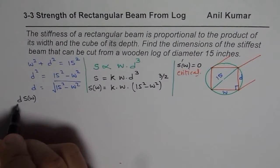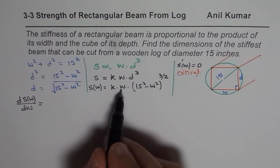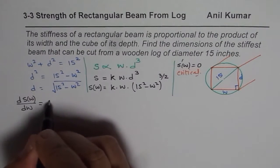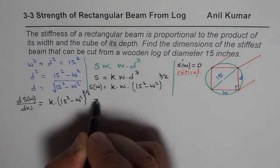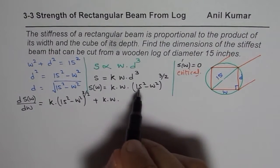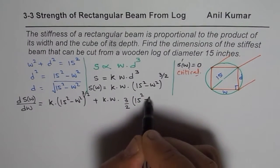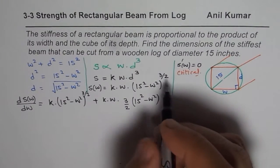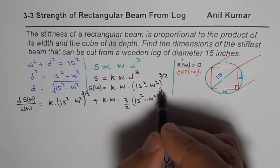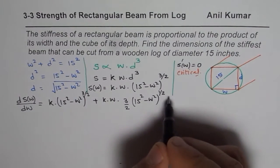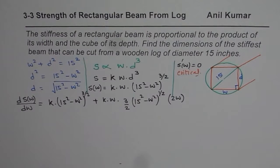The derivative of S with respect to W is found using the product rule: dS/dW = K · (15² − W²)^(3/2) + K · W · (3/2)(15² − W²)^(1/2) · (−2W). The power reduces from 3/2 to 1/2, and the chain rule contributes a factor of −2W from differentiating the inside function.